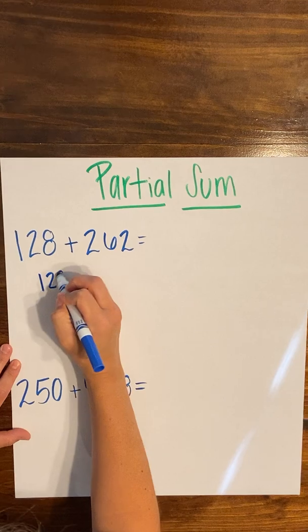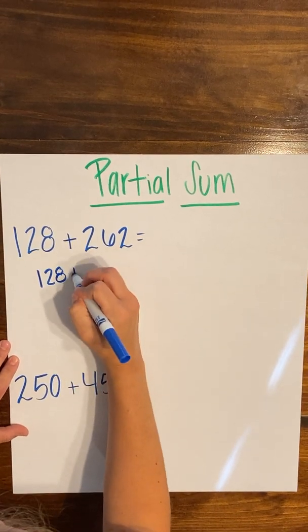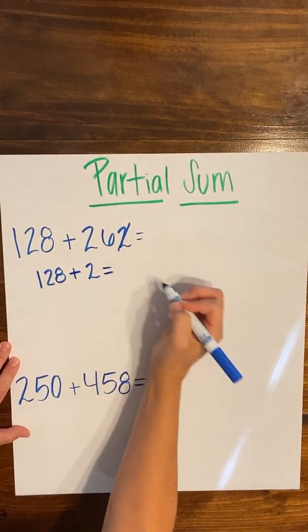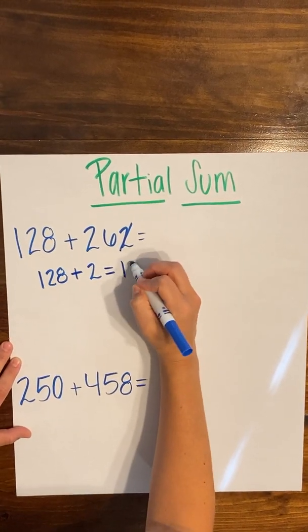So I have 128 and here I'm just going to use the two from the ones place. So now I have 128 plus two and I know that's going to give me 130.